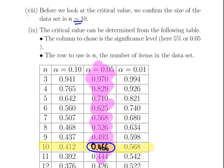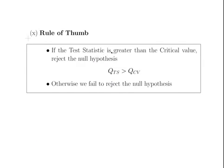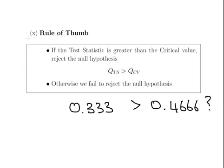We nearly have everything ready now. The rule of thumb: if the test statistic is greater than the critical value, reject the null hypothesis. So in our case, our test statistic was 0.33. Is that greater than 0.466? Or 0.466, 3 decimal places. And the answer here is no. So what we are going to do is, we are going to fail to reject the null hypothesis. There is not enough evidence to say that there is an outlier present in that data set.